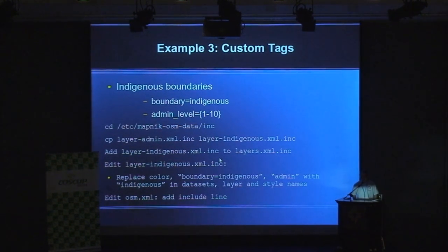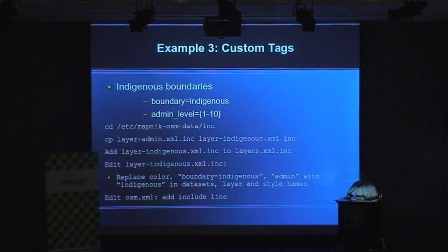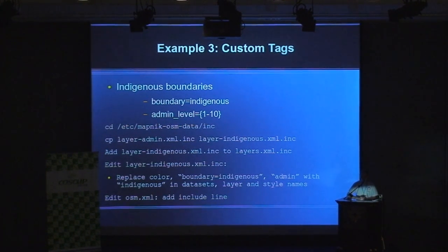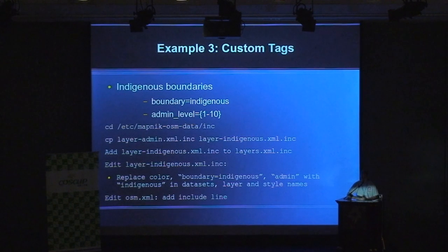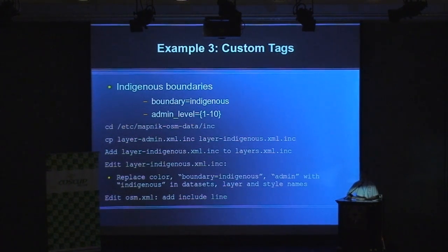The third example is custom tags. In some cases we need to create custom tags — for example, for indigenous boundaries. The indigenous people want to create maps to show the government where their traditional land is. So we need indigenous boundaries, which are not the same as administrative boundaries. We use a custom tag: boundary=indigenous, while normally it would be boundary=administrative. The second tag, admin level, is the same as for administrative boundaries.